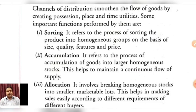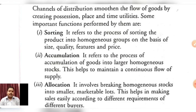Accumulation is done with the help of agents who have responsibility for different areas to supply goods. Allocation means that with the help of retailers, we understand what buyers need in each area. Where there is more demand, more goods and stock are allocated. Where demand is less, less is allocated. So with the help of channel of distribution, we can easily perform sorting, accumulating and allocation of products and services, creating a smooth flow of goods by creating possession, place and time utility.